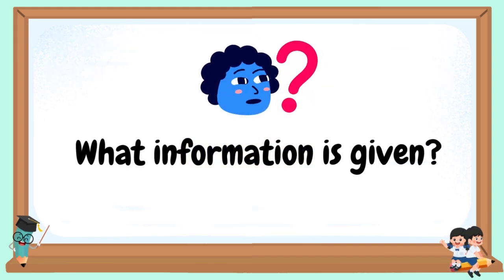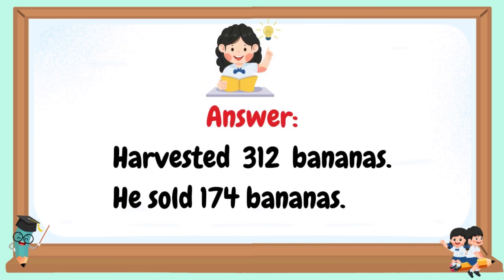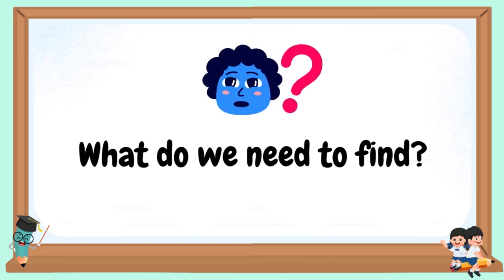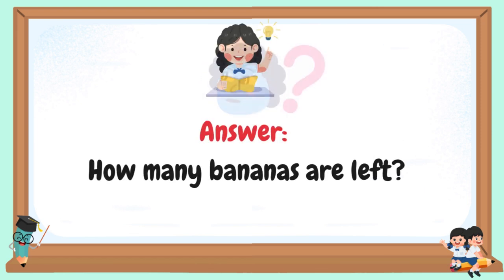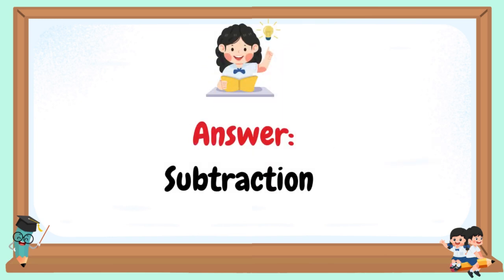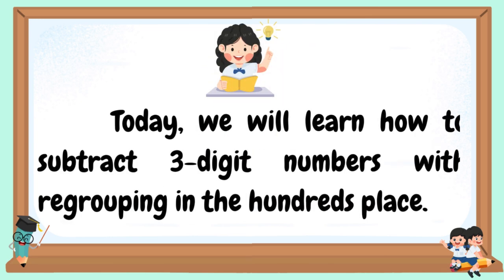What information is given? He harvested 302 bananas and sold 178 bananas. What do we need to find? How many bananas are left? What operation will we use? Subtraction. Today, we will learn how to subtract 3-digit numbers with regrouping in the 100's place.